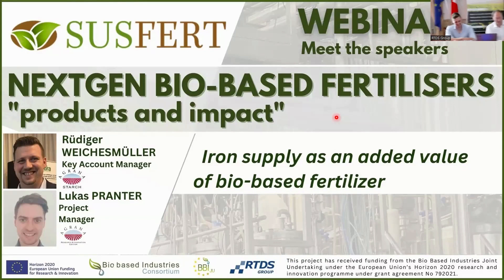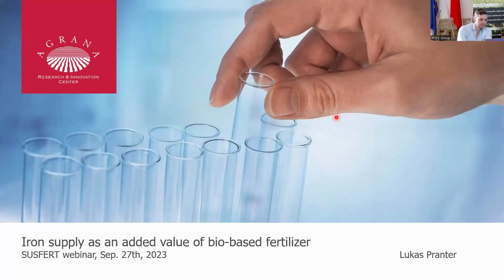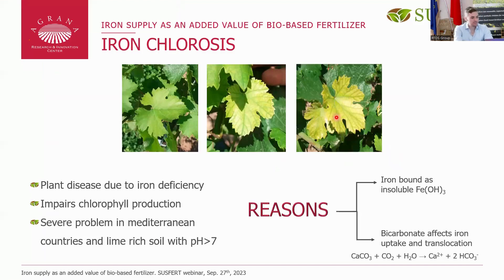Thank you, Mike. Let me give you a short introduction into iron supply as an added value bio-based fertilizer. Iron is an essential component for plants. It is a cofactor for many enzymes and is also used for cytochrome production and chlorophyll production. As you can see in the pictures, with iron deficiency there is less chlorophyll in the leaves of this grapevine.